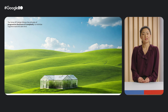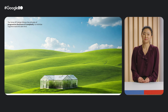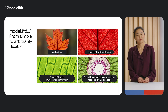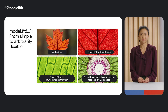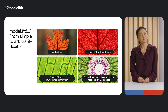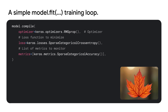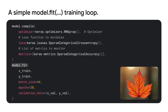The Keras API is designed to follow the principle of the progressive disclosure of complexity, which means that we can call Model.fit in its simplest form or continuously customize it to enable more complex training loops. Here's an example of a simple Model.fit workflow. First, we need to compile the model with an optimizer, a loss function, and a list of metrics we want to measure. Then we call Model.fit, passing in our training data, batch size, epochs, and validation data. It's really simple.